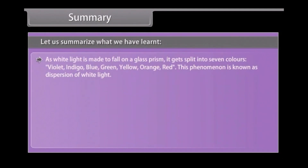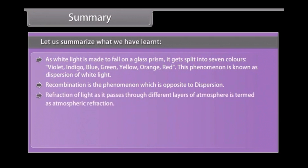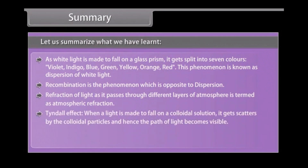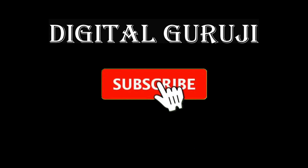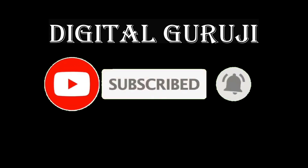When white light falls on a glass prism, it gets split into seven colors — violet, indigo, blue, green, yellow, orange, and red — a phenomenon known as dispersion of white light. Recombination is the phenomenon opposite to dispersion. Refraction of light as it passes through different layers of atmosphere is termed atmospheric refraction. The Tyndall effect occurs when light falls on a colloidal solution and gets scattered by the colloidal particles, making the path of light visible. Scattering occurs as light passes through the atmosphere and gets spread by dust particles or other air molecules.